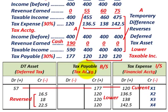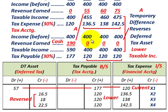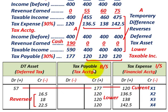Now let's look at the T-accounts and how we record the revenue-based deferred tax asset. For tax expense on the income statement, we debit $120,000 for year one and increasing amounts for the next three years, based on financial accounting. For tax payable from tax accounting: credit $177,000 in year one — that's 30% of $590,000 — then credit $120,000 for each of the next three years.